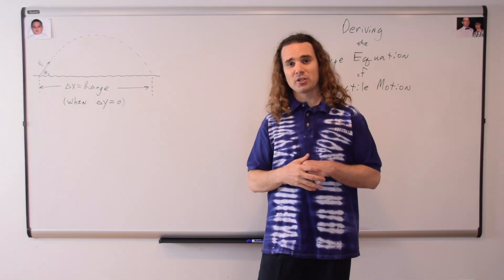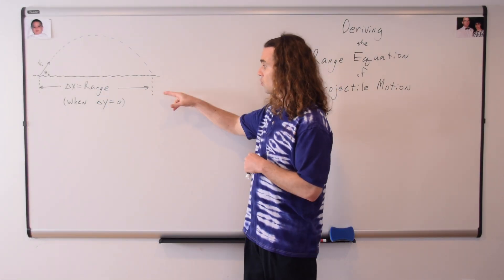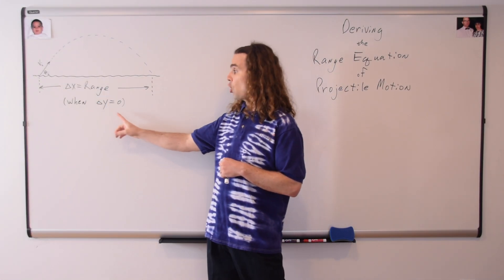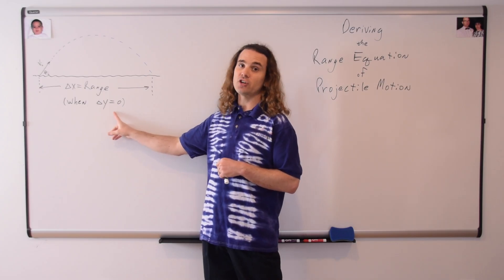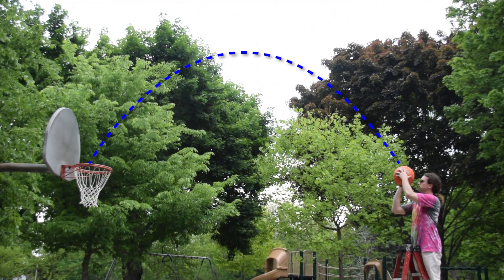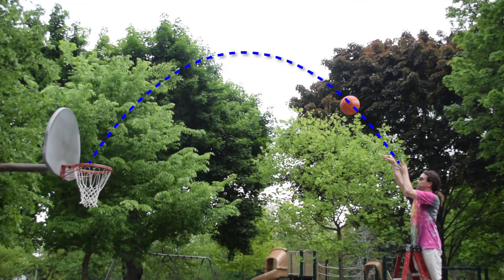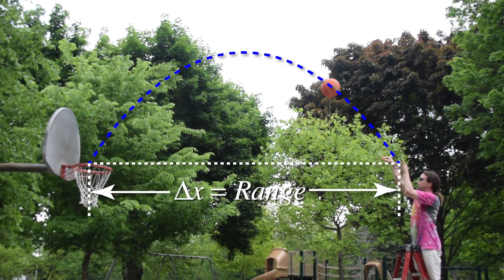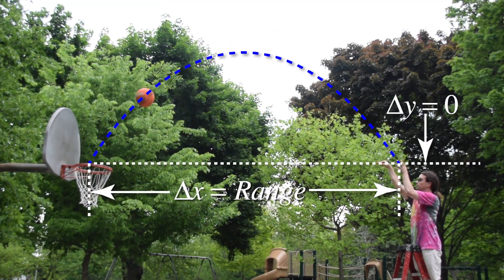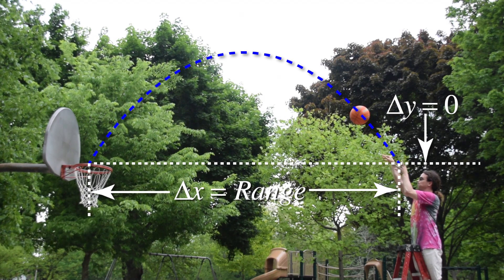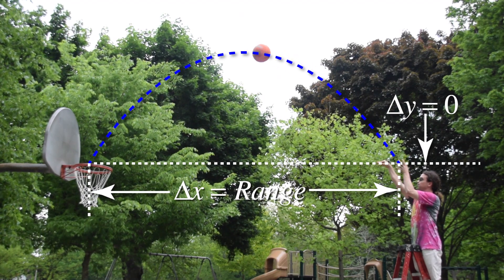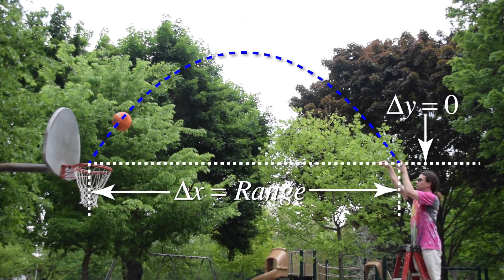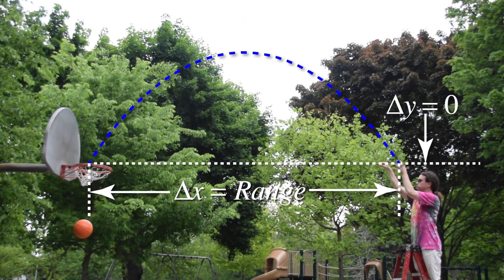The range of a projectile in physics means the horizontal displacement of the projectile when the overall displacement in the y direction of the projectile equals zero. Again, the range of a projectile is defined as the displacement of the object in the x direction when the total displacement of the object in the y direction is equal to zero. It might be better to call it the horizontal range because it is the horizontal displacement. However, it is usually just called the range of a projectile.